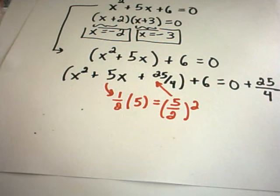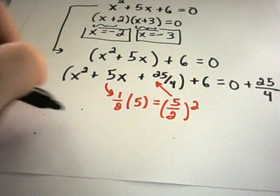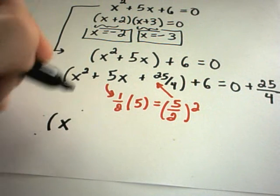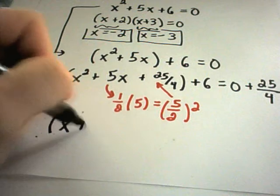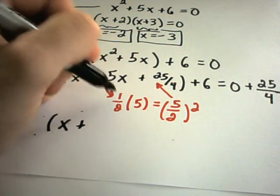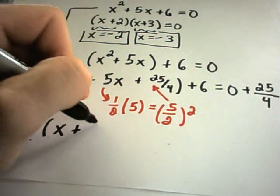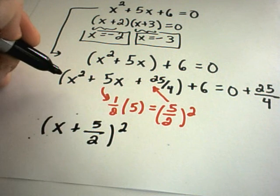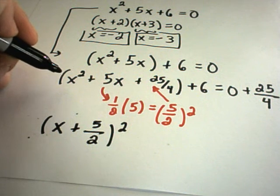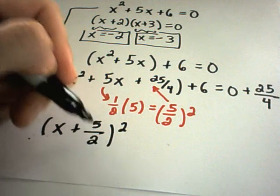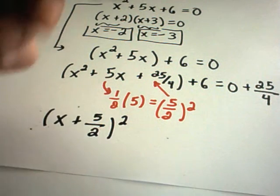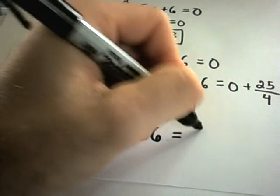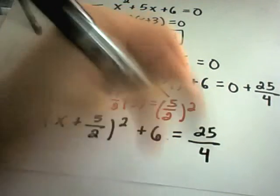So there's the extra 25 over 4 now on the right. On the left side, you can write x squared plus 5x plus 25 over 4 as x plus 5 halves, quantity squared — because when you take one half of the number in front of the x, in this case 5 halves, that's how the expression factors. So x squared plus 5x plus 25 over 4 is equivalent to x plus 5 halves squared.